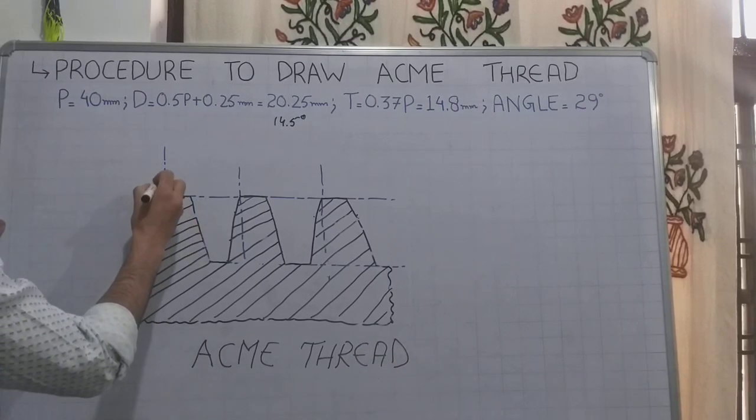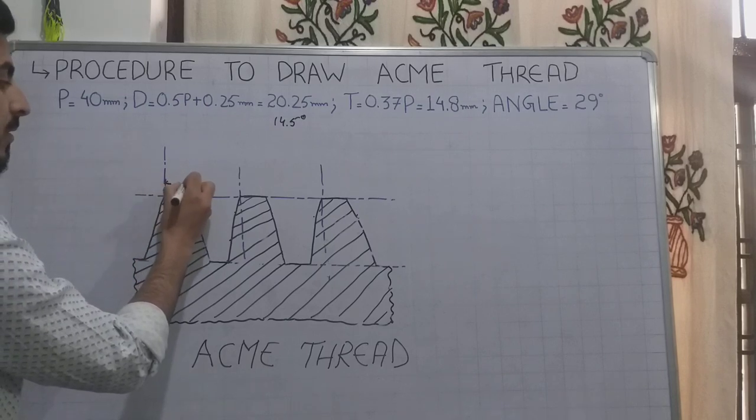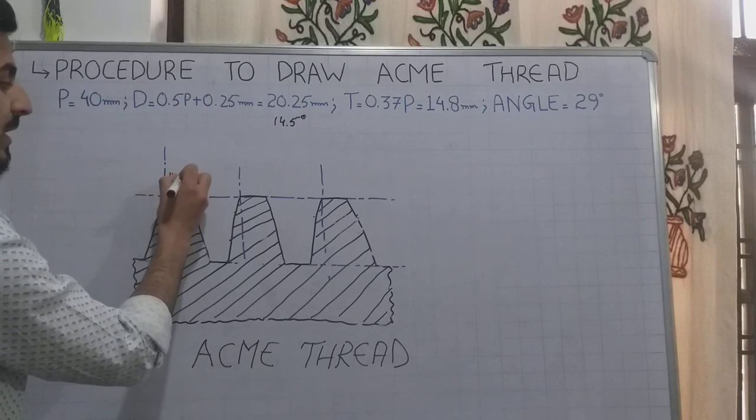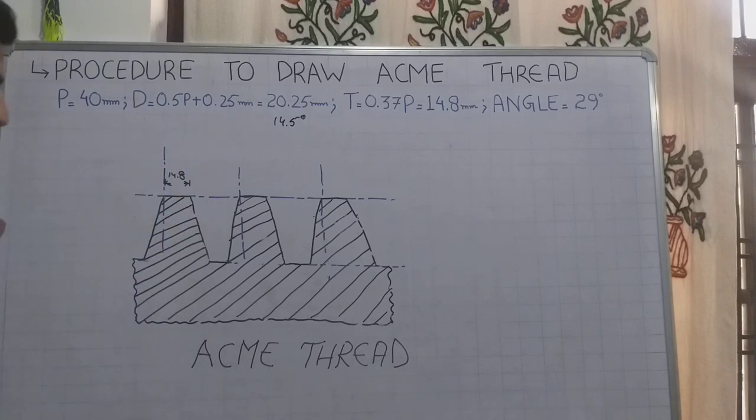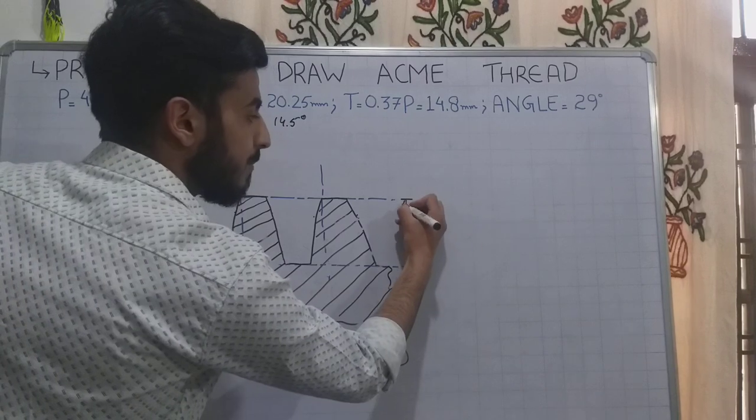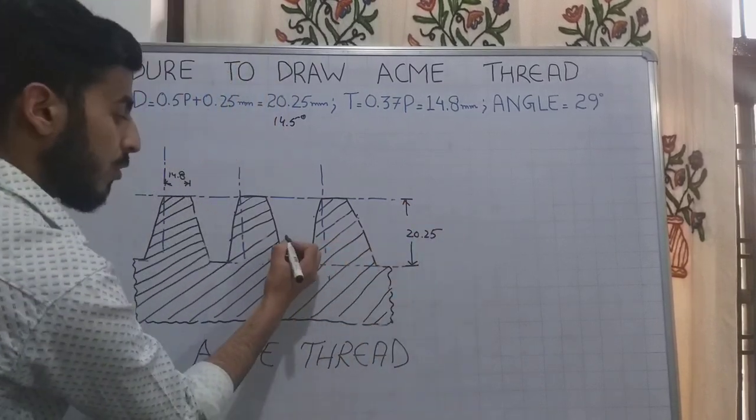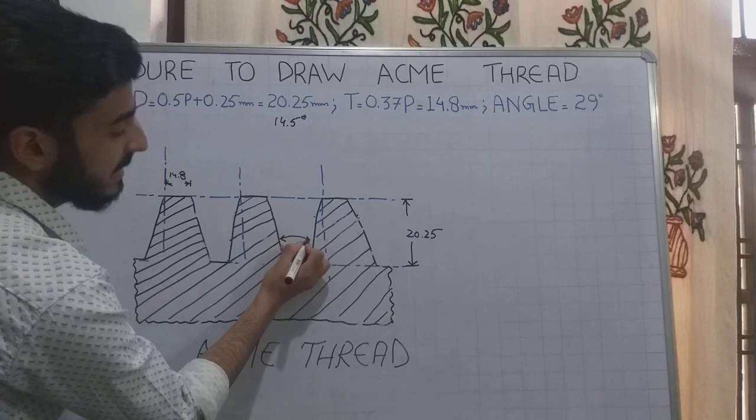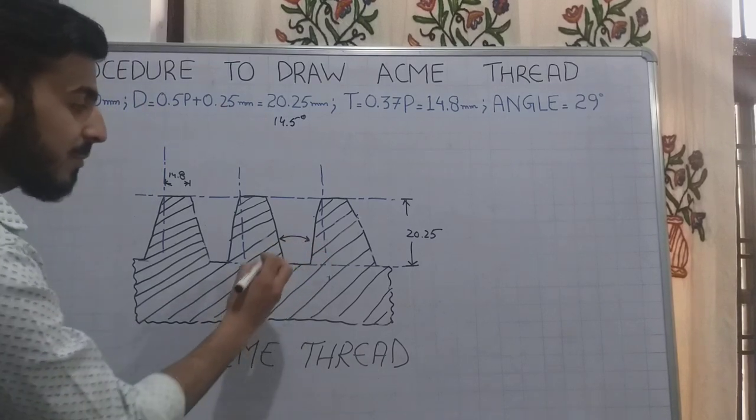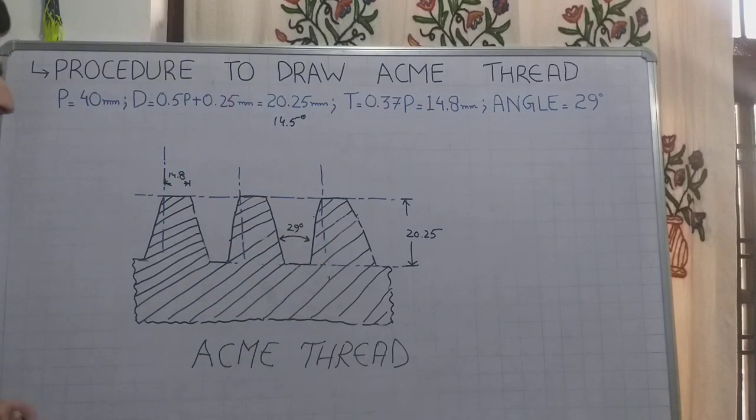This line is the thread's thickness or width, which is 14.8mm. From here to here is the thread's depth, 20.25mm. And the angle between these two is the thread angle of Acme thread, which is 29 degrees. This was the procedure to draw an Acme thread.